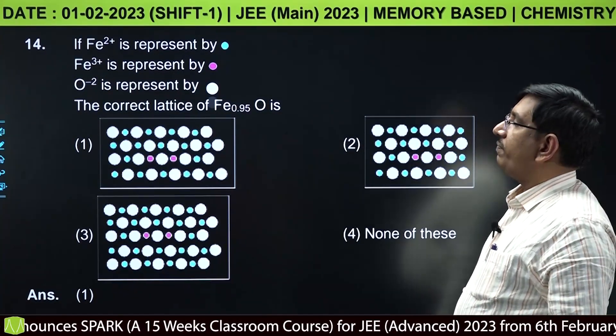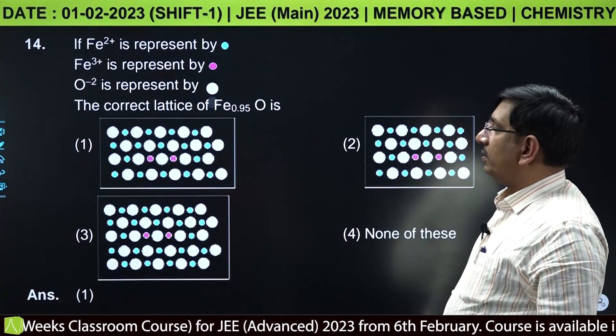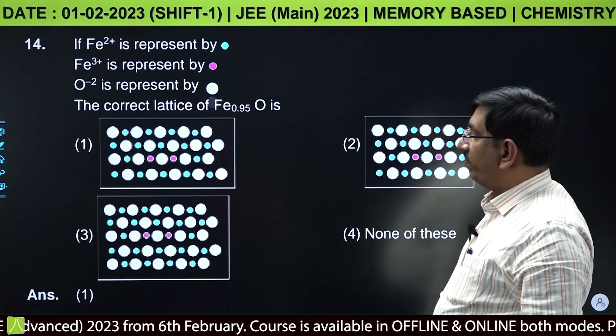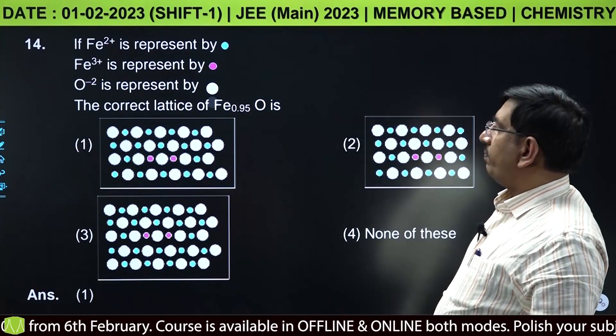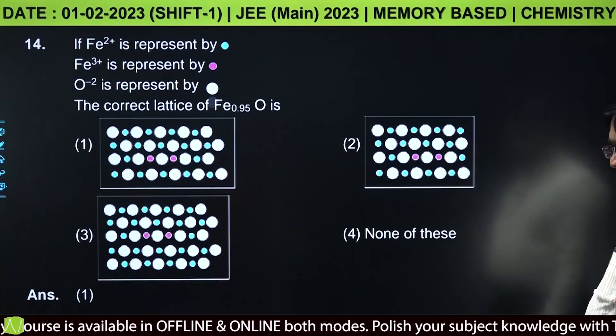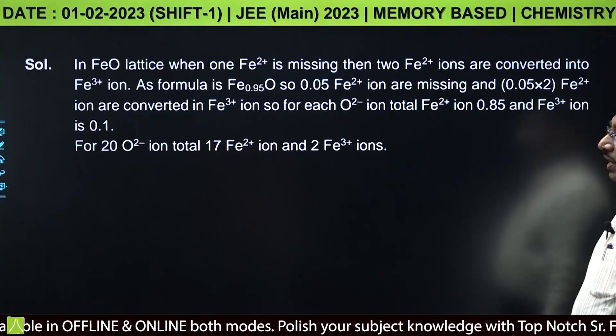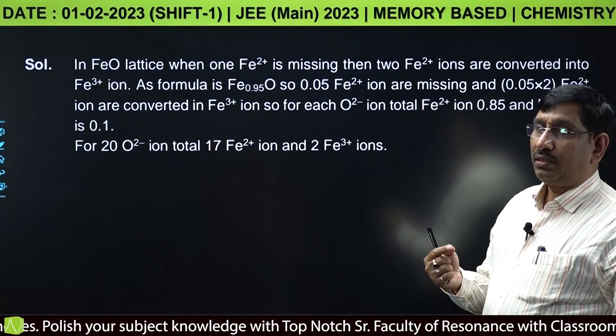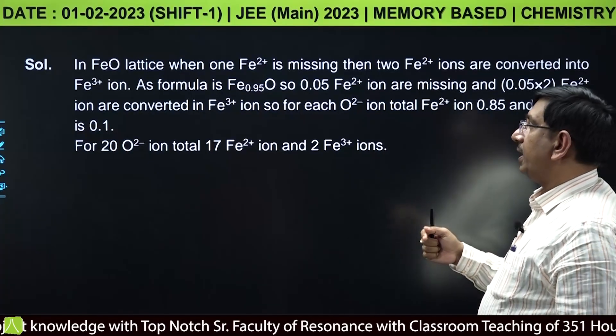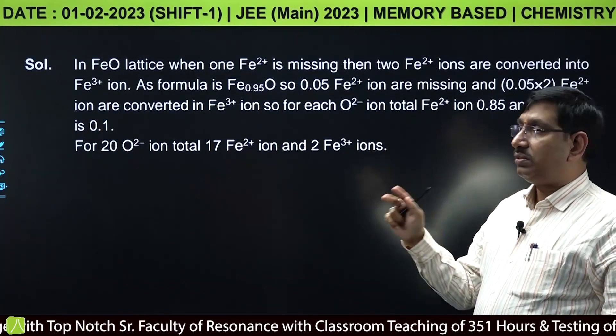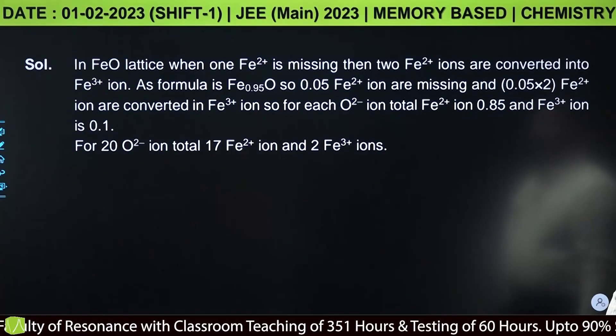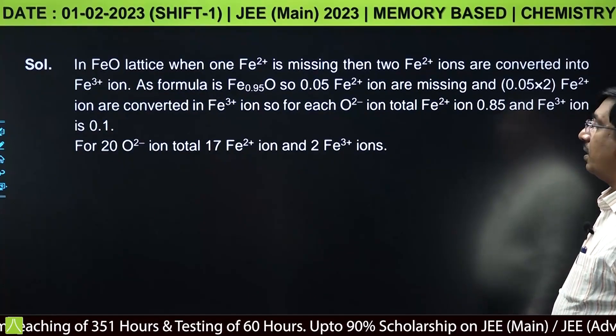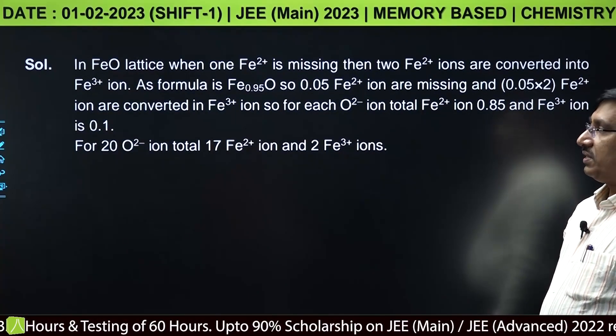If Fe2+ is represented by green, Fe3+ by red, and O2- by white, find the correct lattice of Fe0.95O. In FeO lattice when one Fe2+ is missing, then two Fe2+ ions are converted into Fe3+ ions. Formula Fe0.95O means 0.05 Fe2+ are missing, so 2 × 0.05 = 0.1 Fe3+ will form.